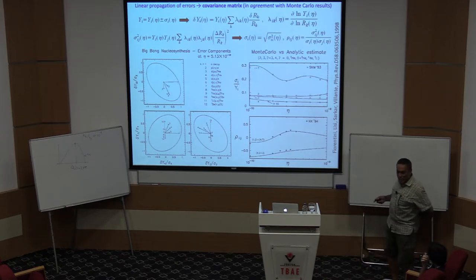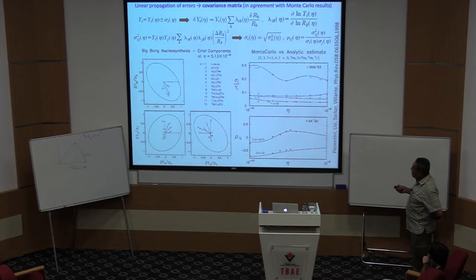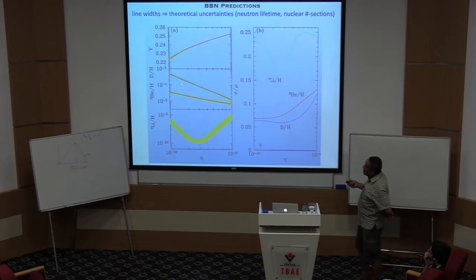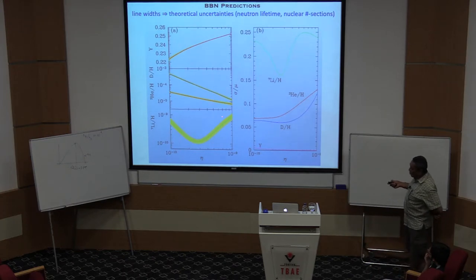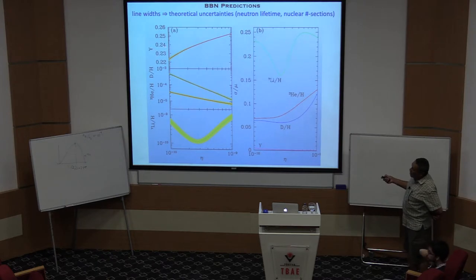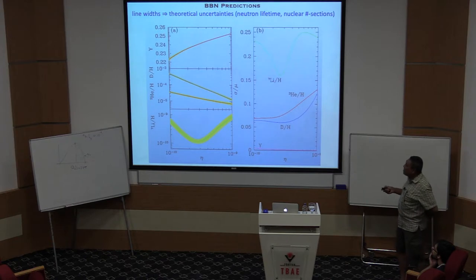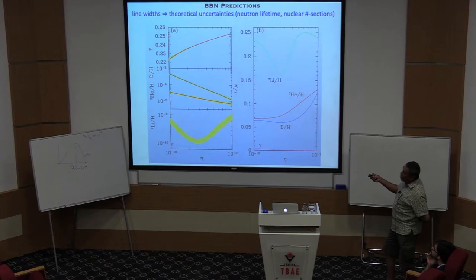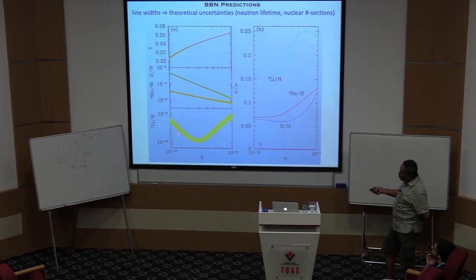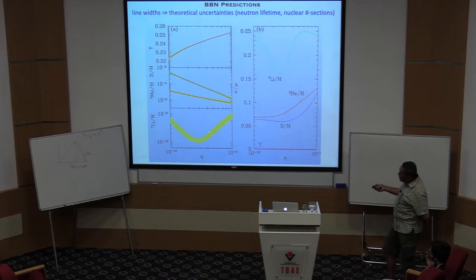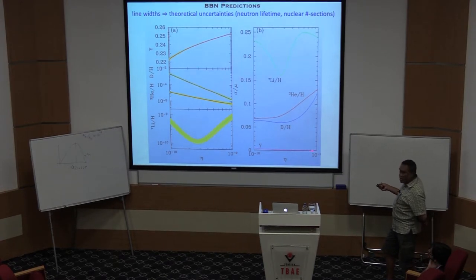We now have a very good understanding of uncertainties in predicted abundances. Helium is plotted on a linear scale and changes by just a couple of percent over the entire possible range of η — around 25%, conventionally called Y. The deuterium abundance plotted on a log scale is a factor of 100,000 times smaller and decreases rapidly with the baryon-to-photon ratio, as does helium-3. Lithium-7 has a double-valued nature because it is formed by different reactions at low versus high density. The uncertainty is largest in lithium-7 at about 20%, whereas for helium it is less than 1% — so with helium we can do precision cosmology.